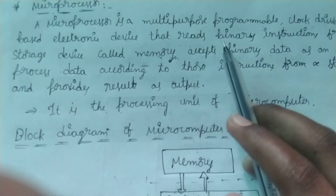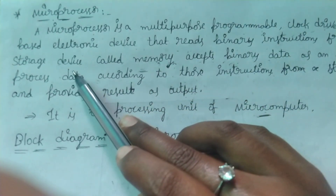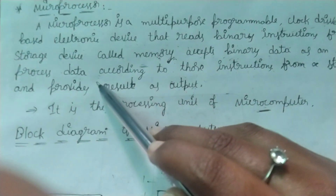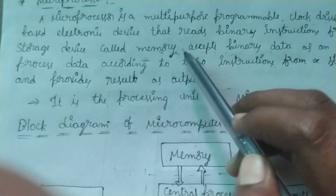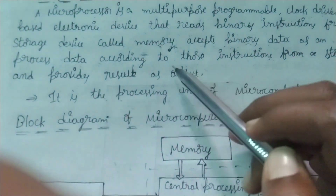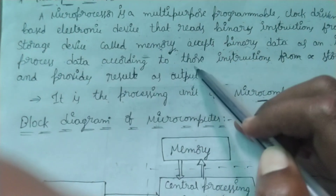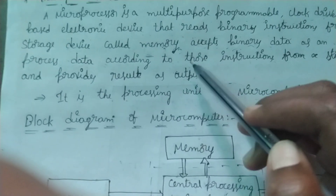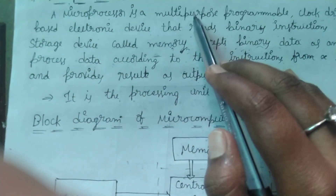This is about microprocessor. First point: microprocessor is multi-purpose programmable. Second point: clock-driven. Third point: register-based electronic device that reads binary instructions from storage device called memory. It uses binary data as input, processes that data, and provides output. This is the definition of microprocessor — it is a very important definition that we have to remember.